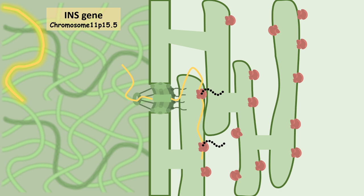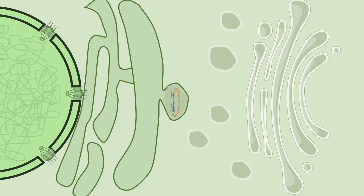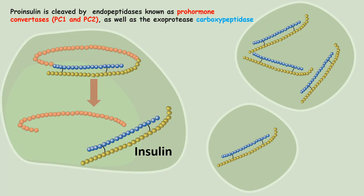These peptides are packaged inside the endoplasmic reticulum, then moved through the cell's secretory pathway via the Golgi apparatus as a secretory vesicle. Inside the secretory vesicle, specific enzymes such as prohormone convertase and carboxypeptidase cleave the C-peptide of the insulin — depicted here as an orange beaded string. The insulin hormone is then packaged inside these vesicles, ready to be secreted.